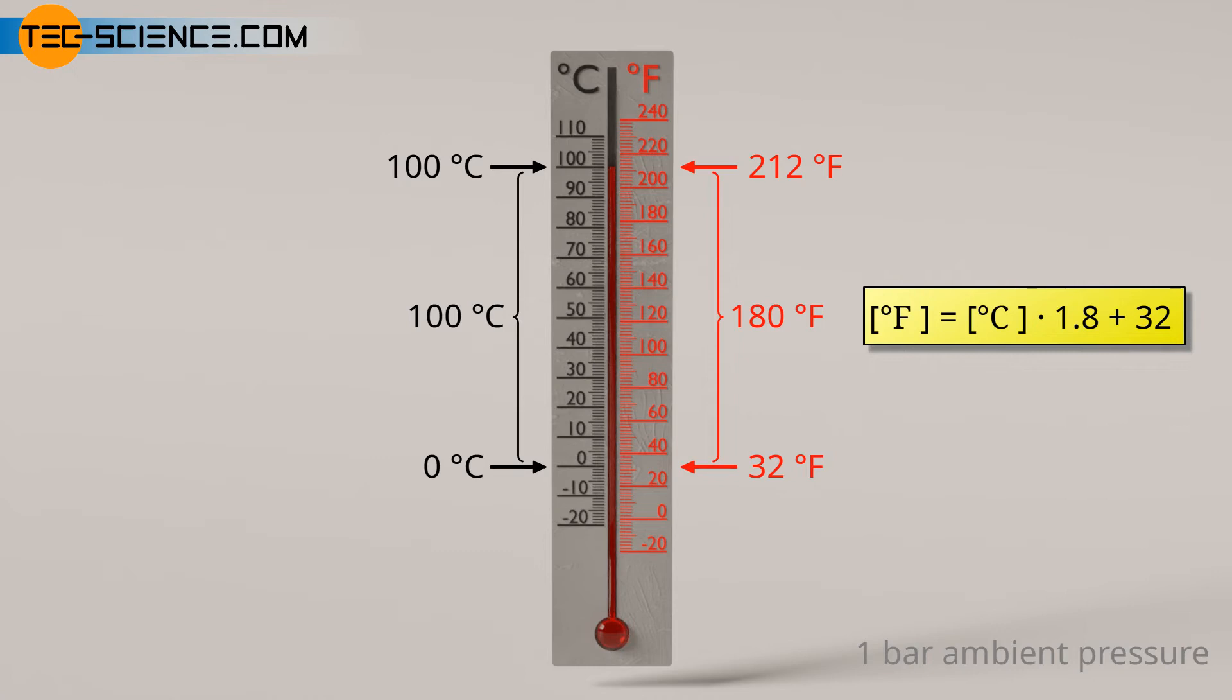If the temperature in the Celsius scale changes by 1 degree, the temperature value in the Fahrenheit scale changes by 1.8 degrees. In addition, for the temperature value, the shift of the zero point for the freezing point of water must be taken into account, which is 32 degrees Fahrenheit.